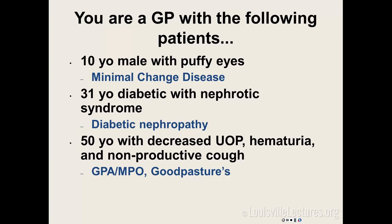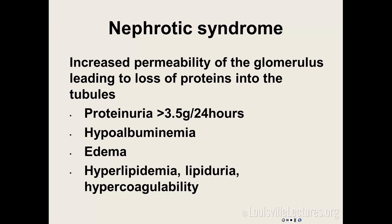Nephrotic syndrome is a problem in your glomeruli where you start leaking tremendous amounts of protein — more than 3.5 grams in 24 hours. You don't have to do a 24-hour protein collection; you can do a spot urine protein-creatinine ratio, which is just as good. You have hypoalbuminemia, edema due to decreased oncotic pressure, hyperlipidemia, lipiduria, and hypercoagulability. You lose antithrombin, protein C, everything. The lower your albumin, the more hypercoagulable you will be — usually when albumin is less than two.